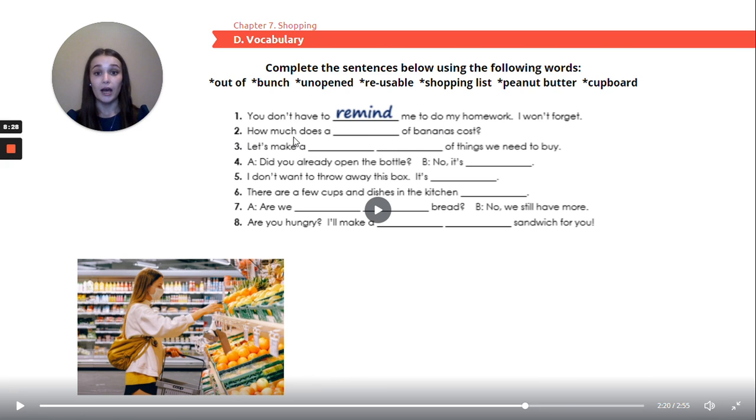Sentence number two. How much does a bunch of bananas cost? Sentence number three. Let's make a shopping list of things we need to buy. Four. Someone asks, did you already open the bottle? And then someone answers, no, it's unopened. Sentence number five. I don't want to throw away this box. It's reusable.